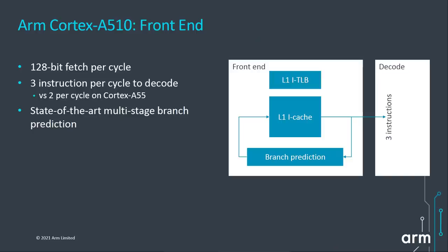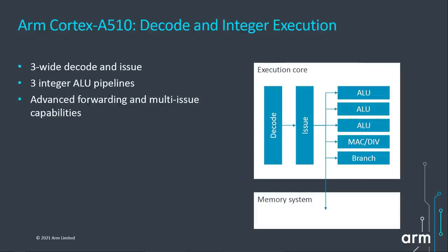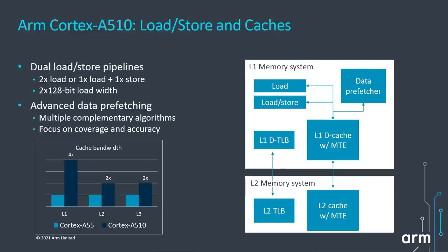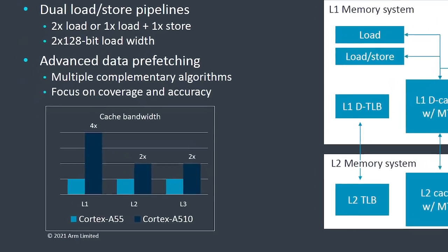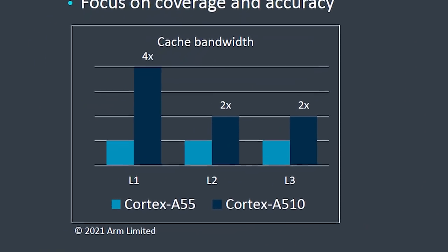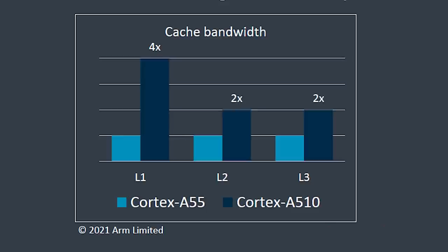Just a few other things about the Cortex-A510: it has a 128-bit fetch cycle, three instructions per cycle can be decoded — versus two per cycle for the A55 — better branch prediction as mentioned, three-wide decode and three-wide integer ALU pipe. There are also improvements to the load and store caches allowing greater bandwidth, with up to a four times increase in L1 cache bandwidth compared to the Cortex-A55.